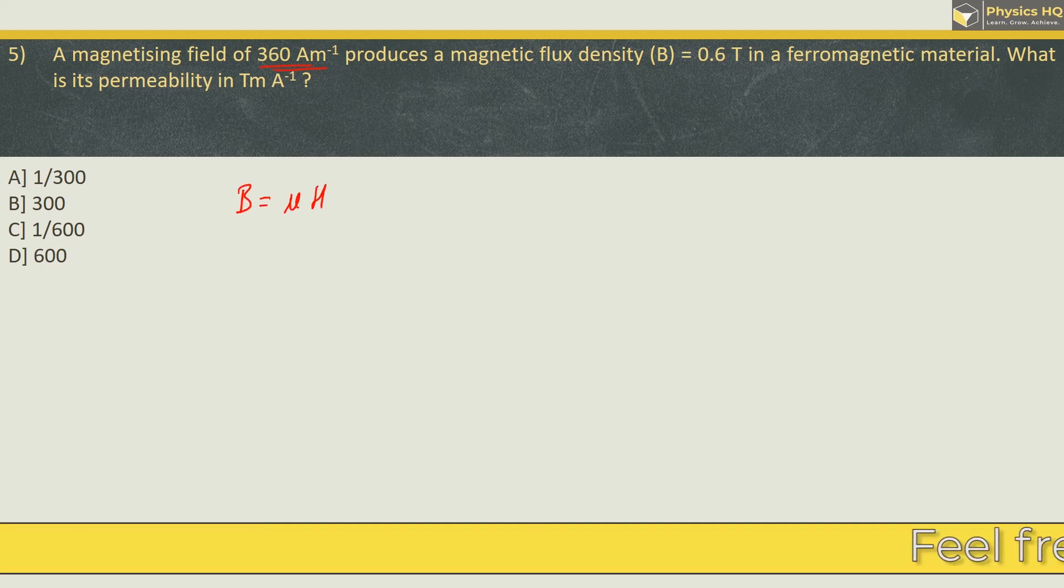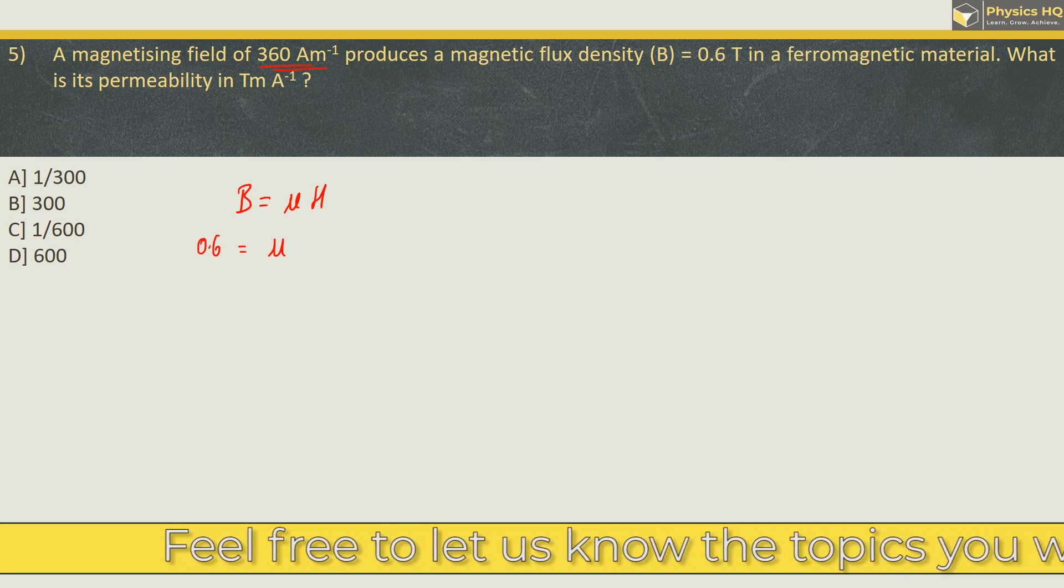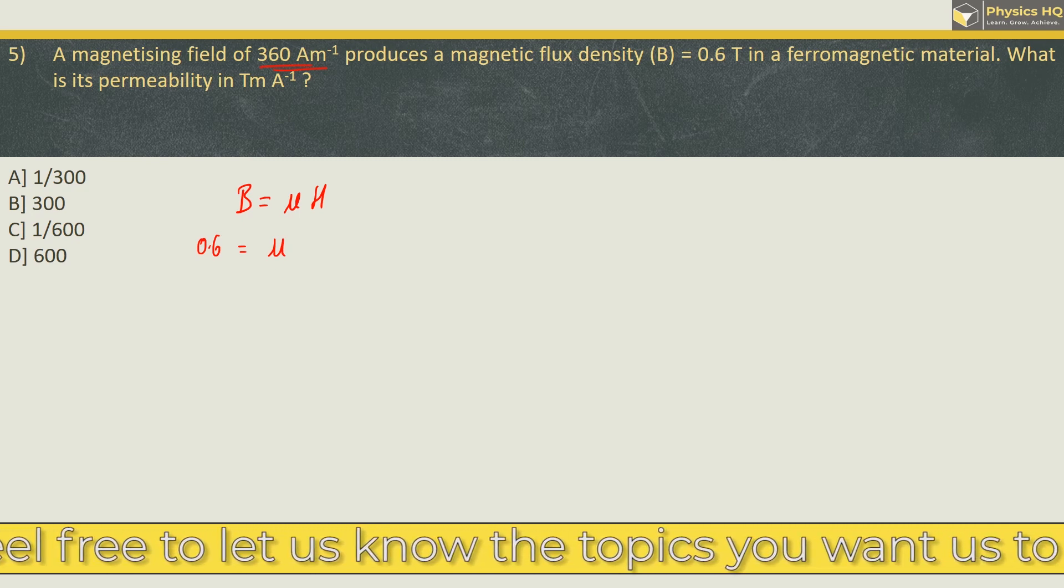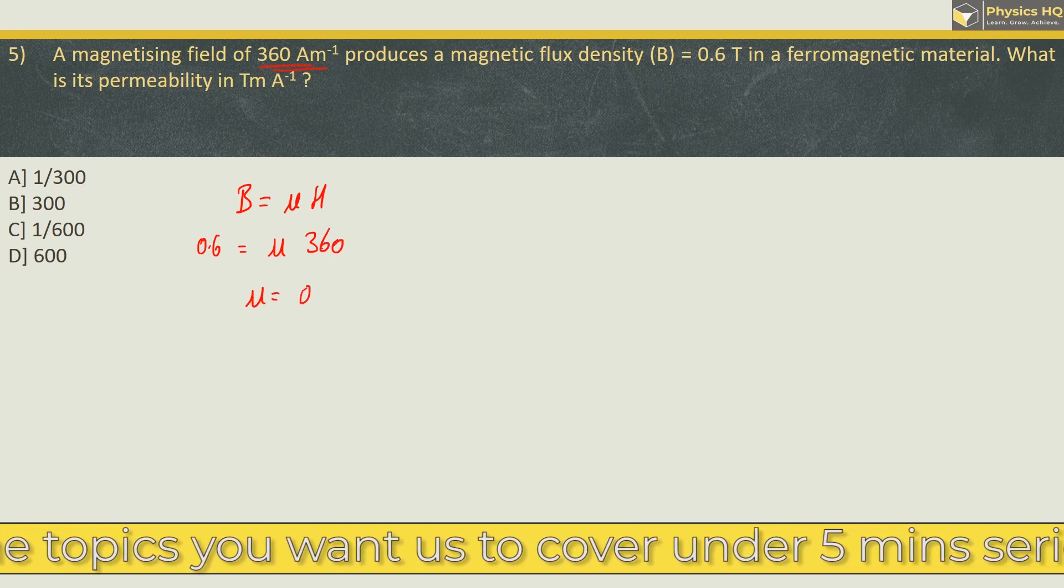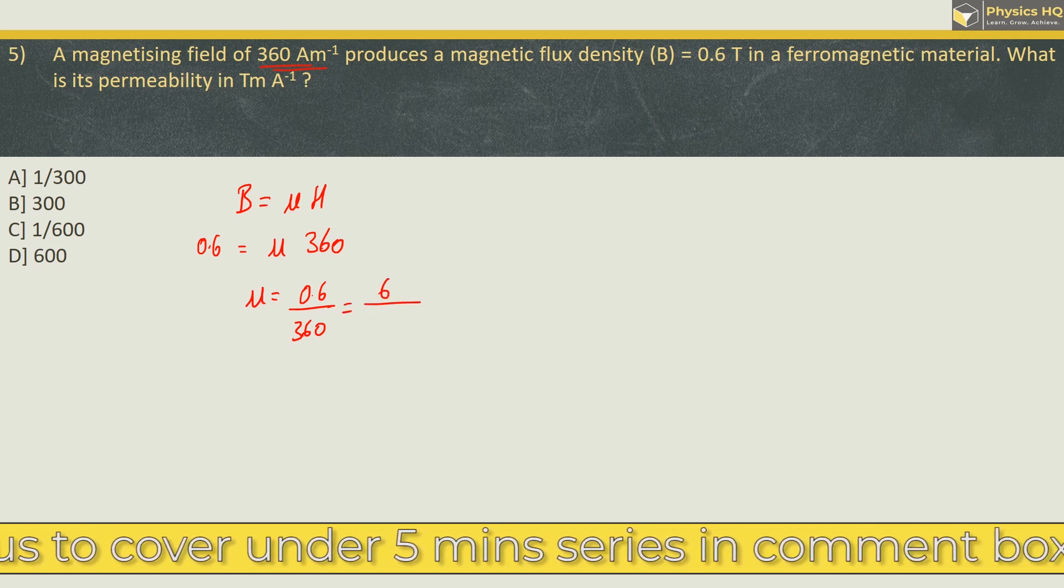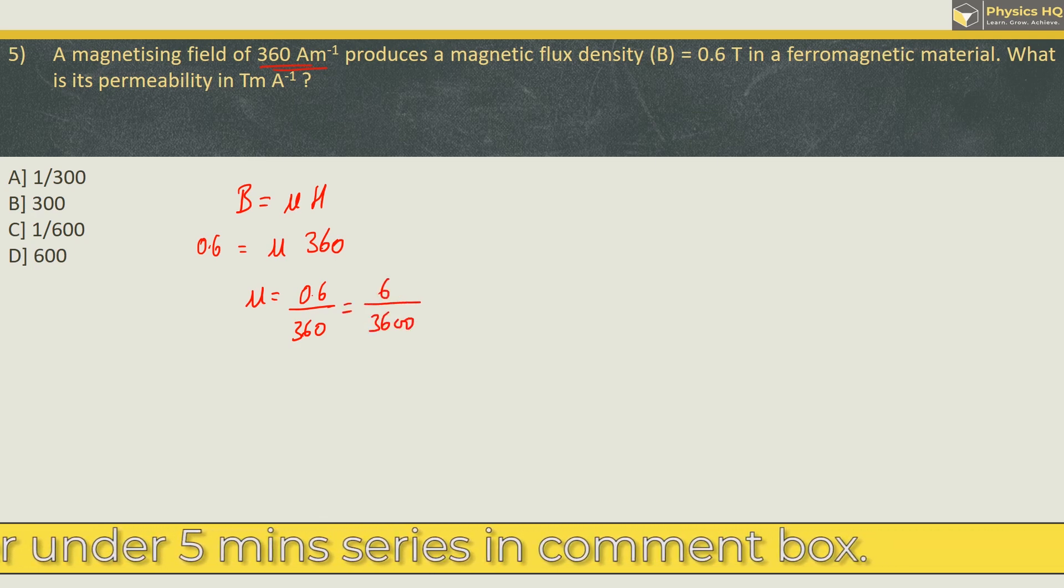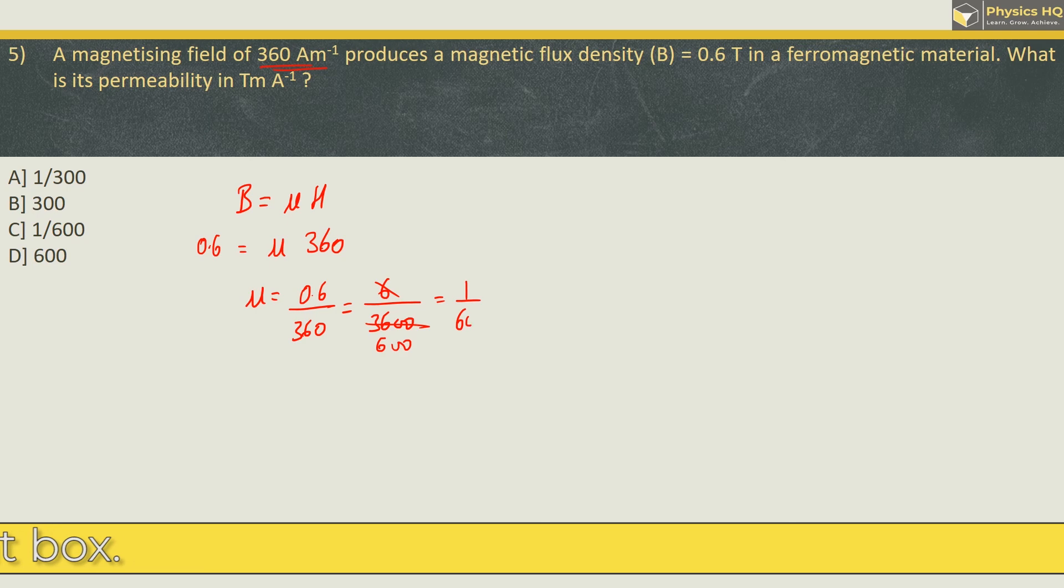B is the magnetic flux density that is given as 0.6. Mu is the permeability of the medium that we have to find. H is the magnetizing field which is given as 360. So we can write mu is equal to 0.6 / 360 or we can write this as 6 / 3600. Let us divide this and we get mu value as 1 / 600. So the correct option is option C.